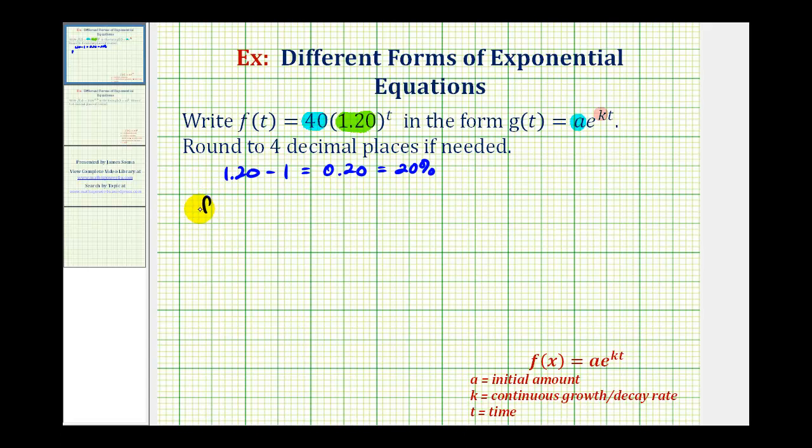Let's find f(0), which would just be 40(1.20)^0 = 40(1) = 40. And f(1) would be 40(1.20)^1 = 40(1.2) = 48.